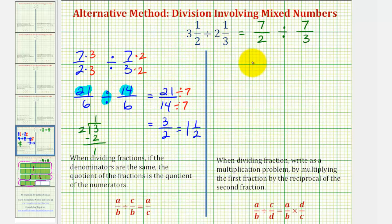Let's also show the traditional method for finding this quotient. Starting with seven-halves divided by seven-thirds, this is equivalent to the multiplication problem, where we have seven-halves times the reciprocal of seven-thirds, which would be three-sevenths. The sevens would simplify to one, leaving us with a product of three-halves.